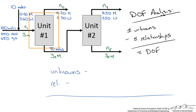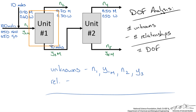Looking at the first separation unit, the unknowns are N1, Y1M, N2, and Y3M — 4 unknowns. We can write 2 balances, but we cannot use the N2-equals-N4 relationship since N4 is not part of this analysis. So we have 4 unknowns and 2 balances, leaving 2 degrees of freedom. We cannot start at unit 1.